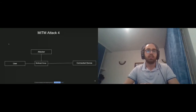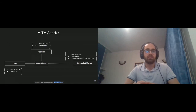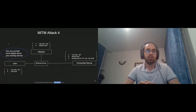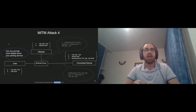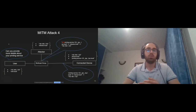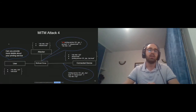In attack number four, the user asks about services and the connected device provides the printing service. The attacker adds an invisible character at the beginning of the local service name. The user will find in the interface two services appearing to have the same name. Since the names are sorted, the user will most likely pick the first one, which corresponds to the malicious service, thus succeeding at the attack.